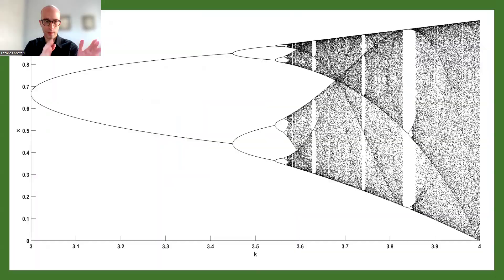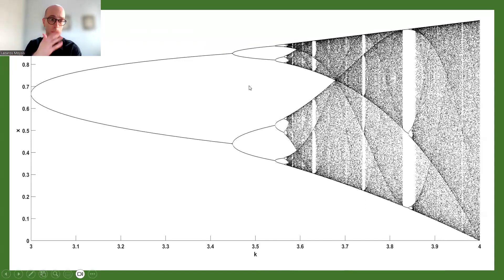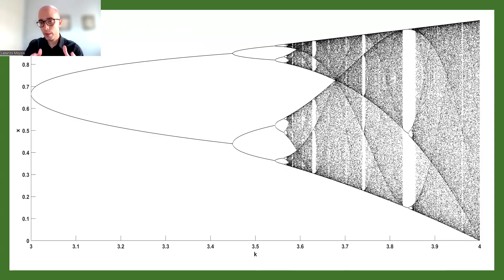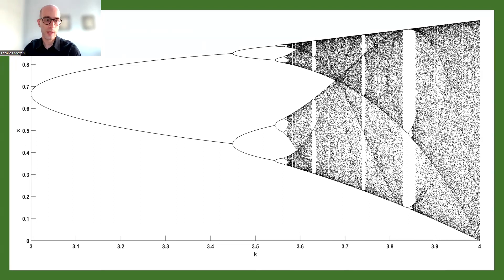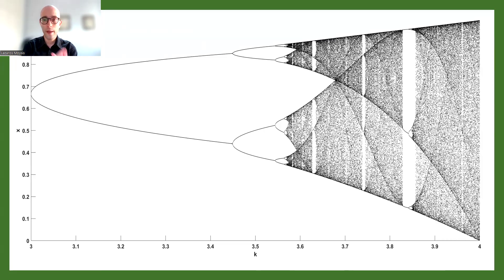Zooming in on the logistic map for the range from 3 to 4, we can see the transitions in and out of chaos, the period-doubling route, and some crisis phenomena. But what this graph doesn't show us is the statistical distribution of the map. As we change the parameter value and obtain a time series — whether periodic or chaotic — we don't know how the values are distributed. We would need to separately compute the histogram to obtain that statistical information.